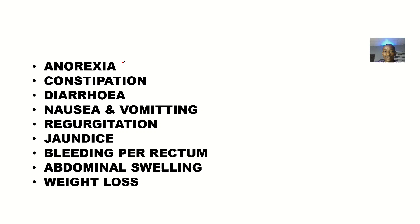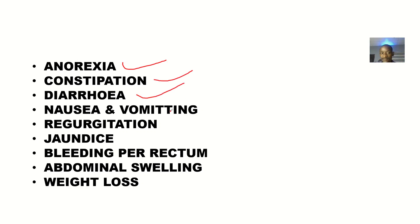Acute abdomen could result in anorexia — that's a decreased appetite. It could result in constipation, it could result in diarrhea, and it could result in nausea and vomiting. Nausea is a feeling like you want to vomit, and vomiting is actually putting out stomach content.